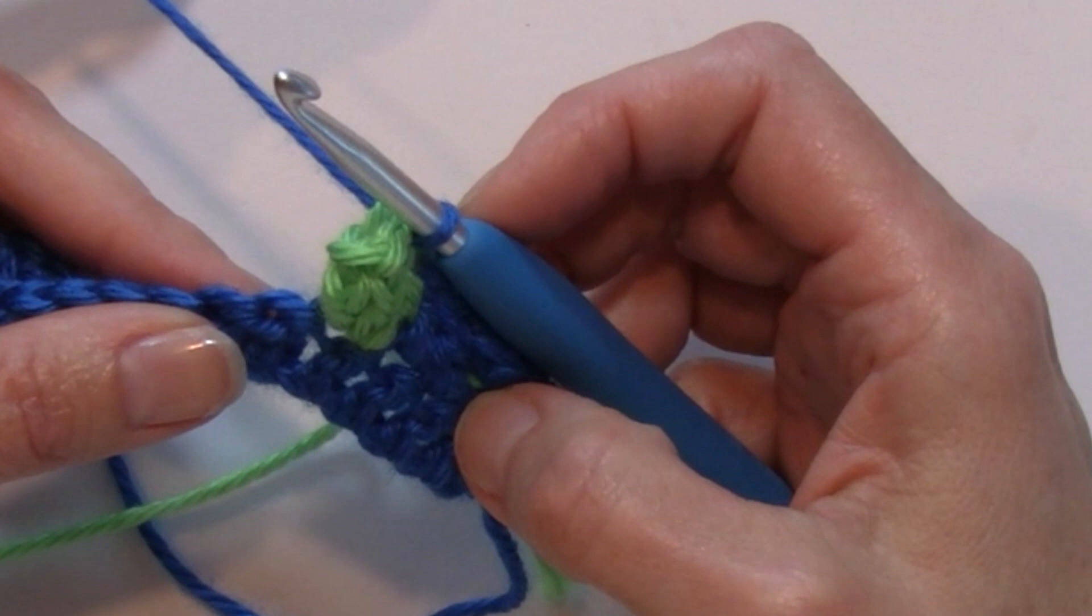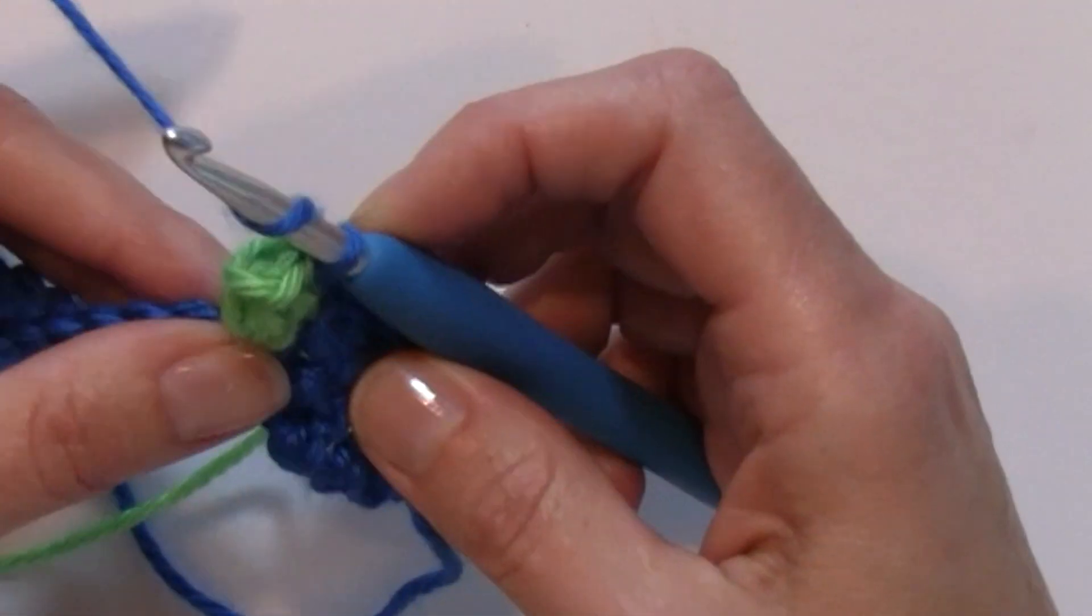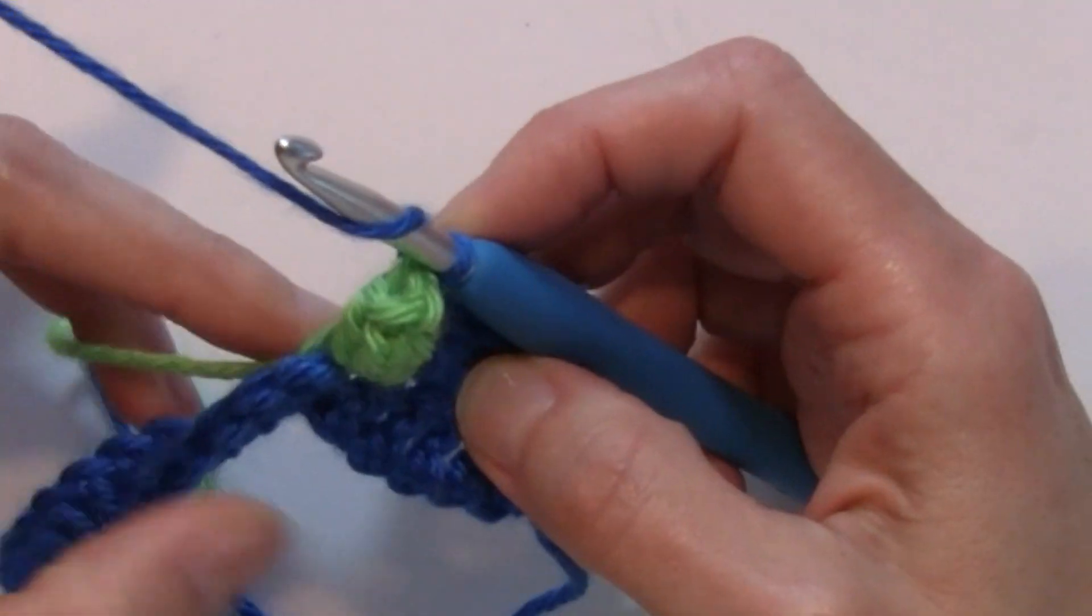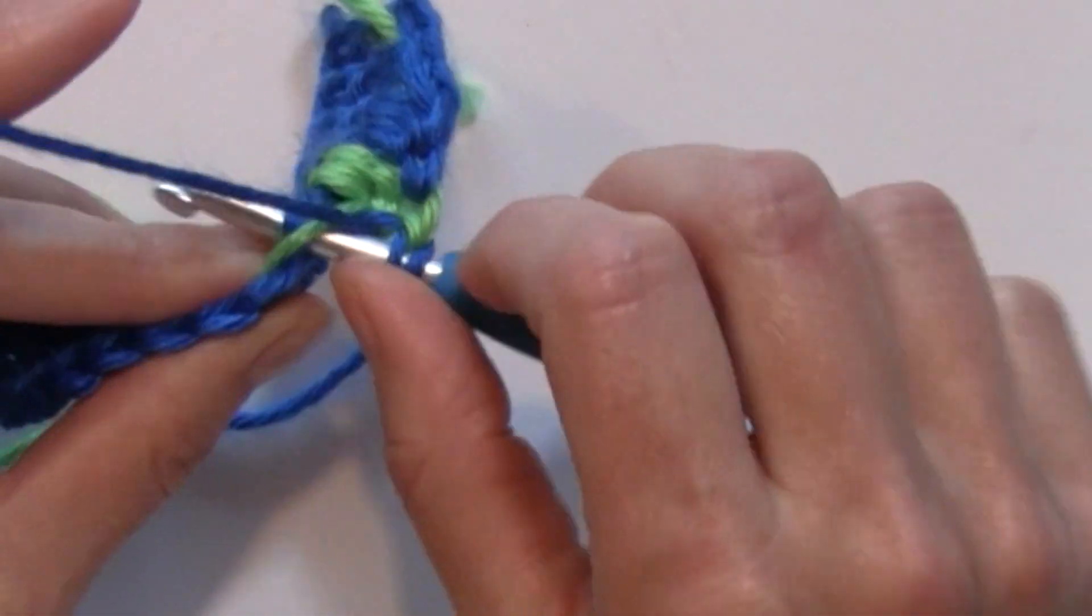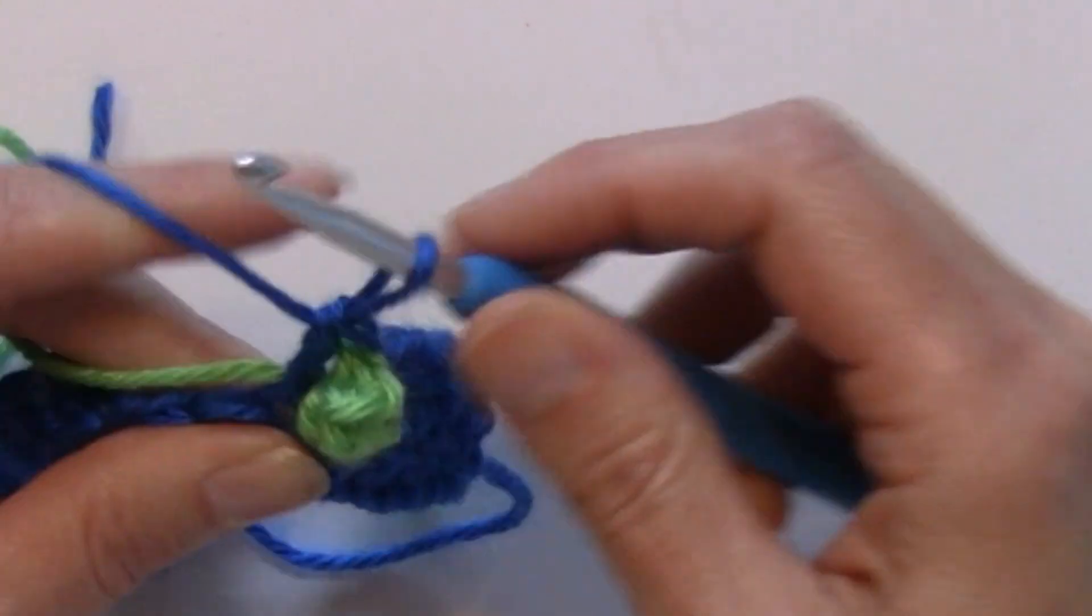Typically you do not skip stitches before or after a popcorn stitch. You would just go ahead then, and I am going to be working over that color because I want to work my next popcorn in that color again, and I'm going to work a double crochet in the next four stitches.